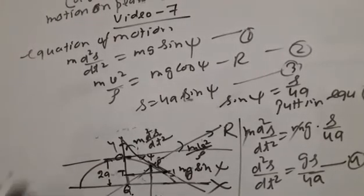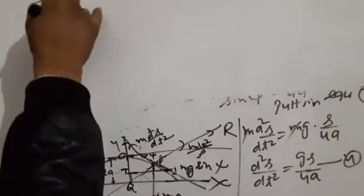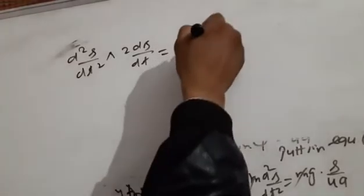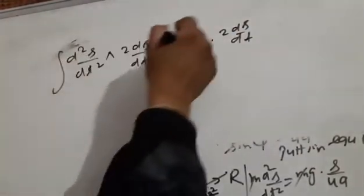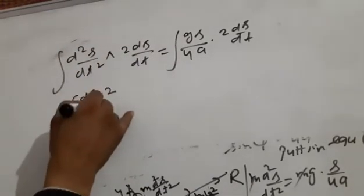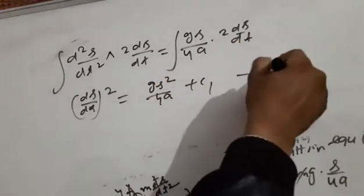Multiplying both sides of equation number 4 by 2·(ds/dt): 2·(ds/dt)·(d²s/dt²) = g·s/(4a)·2·(ds/dt). Integrating both sides, we get (ds/dt)² = g·s²/(4a) + C₁ — this is equation number 5.